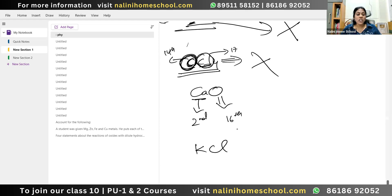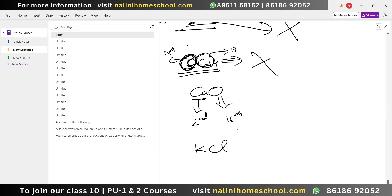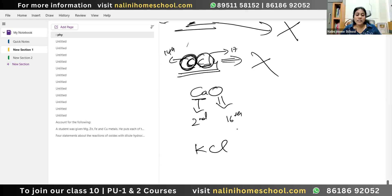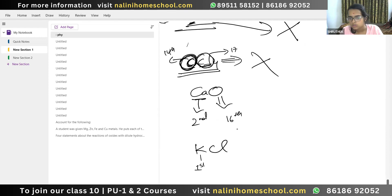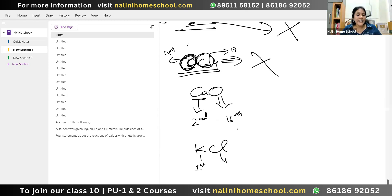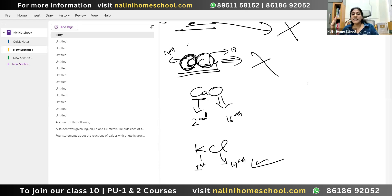KCl — ionic compound or not? Yes, ionic. Potassium comes in the first group; Cl is a non-metal in the 17th group. So this combination is ionic. This is very, very, very important — this is how you decide.